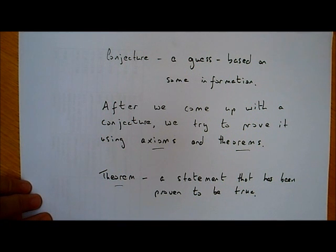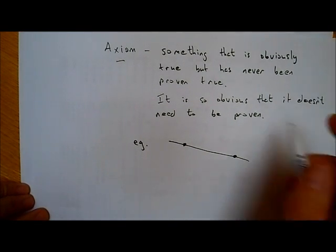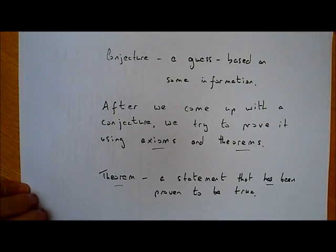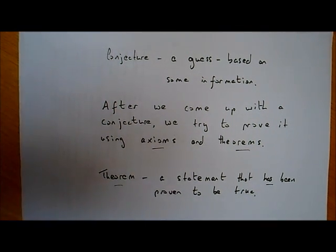A theorem is a statement that has been proven to be true. An axiom, if you remember, is something that is obviously true but has never been proven, whereas a theorem is a statement that has been proven to be true. So there are three very important definitions that we use all the time in maths.